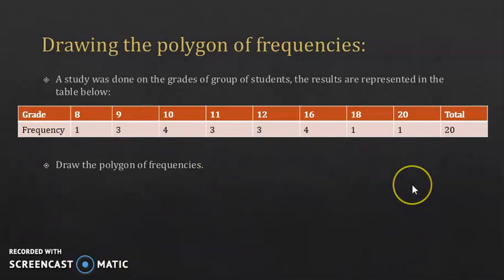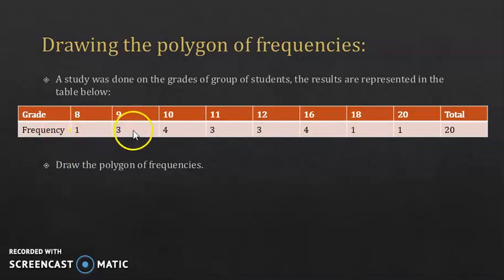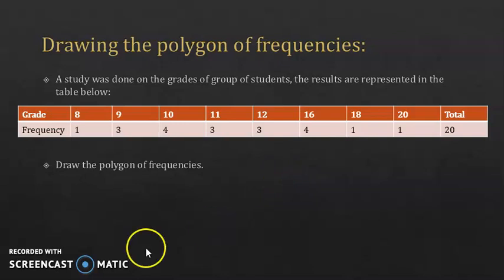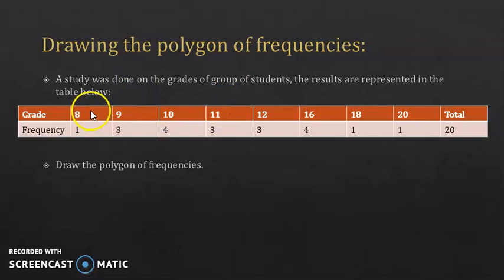First, you need to think of the scale. Let's choose the scale on the y-axis because it's what matters. The frequencies are 1, 3, 4 only, so for each 1 centimeter on the y-axis it should correspond to a frequency of 1. For the values on the x-axis, which correspond to the grades: if the scale is easy, do it; if not, you can just ignore the scale and put them in increasing order. Here the grades range between 8 and 20, so you can use each 1 unit on the x-axis to correspond to 1 point of the grades.